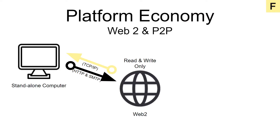Ten years later, we saw the rise of what we are now calling Web2. This evolution was possible due to the addition of protocols to transfer additional information. This allowed a more programmable internet, using protocols like HTTP for hypertext and SMTP for emails.